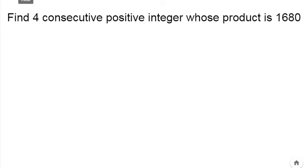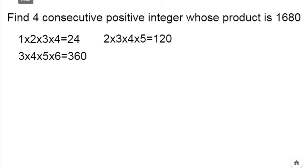By trial and error method, let's start: 1×2×3×4=24, then 2×3×4×5=120, 3×4×5×6=360, 4×5×6×7=840, 5×6×7×8=1680. This is the answer. So these are the four consecutive numbers.